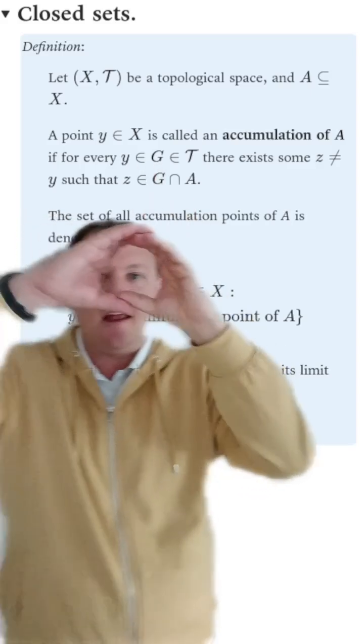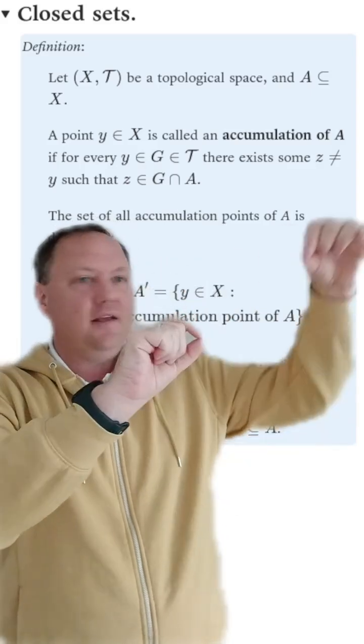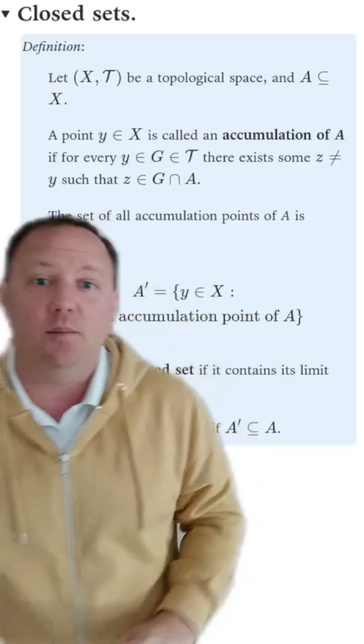You want to think of G as kind of like a neighborhood surrounding Y, and every time you take a neighborhood of Y, there's always some little bit of A in that neighborhood.